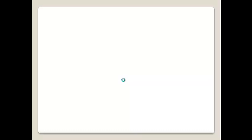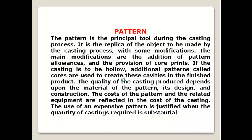Now we look in detail at what each of these were. The first thing is pattern. In the last class we have seen what is a pattern. Pattern is a replica of the final casting which is to be made or manufactured. In detail, a pattern is a principle tool during the casting process because it gives us the final product, the final casting. So it is a replica of the object.